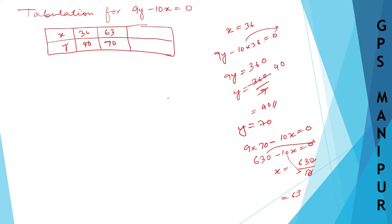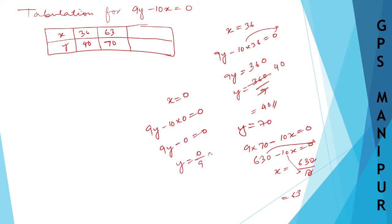Let me also try x = 0. Then 9y minus 10 × 0 = 0, so 9y = 0, giving y = 0. So when x = 0, y = 0. Our three points are (36, 40), (63, 70), and (0, 0).